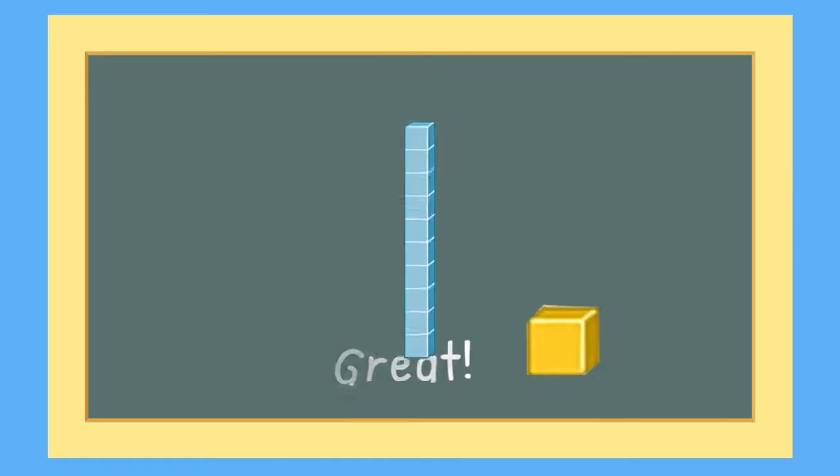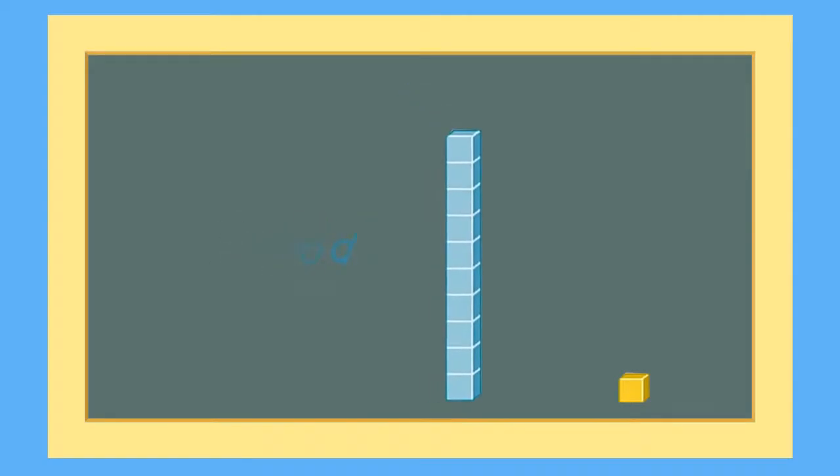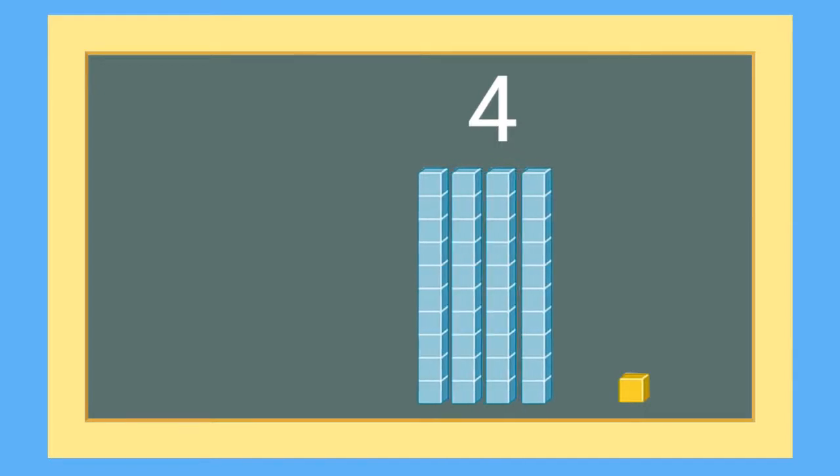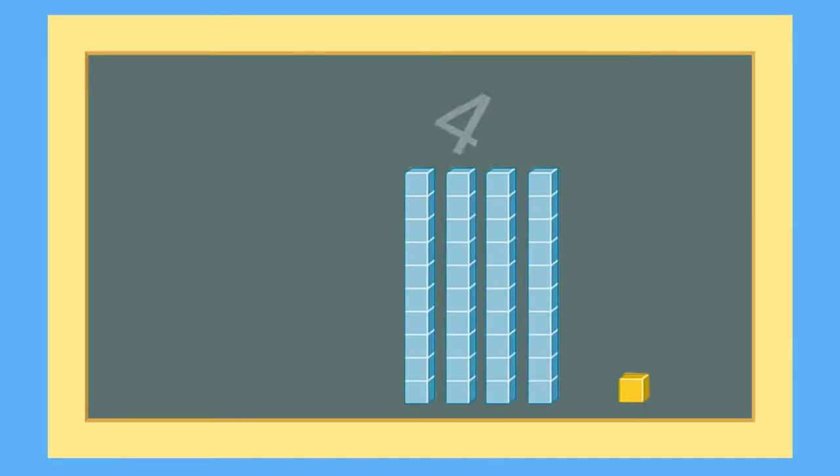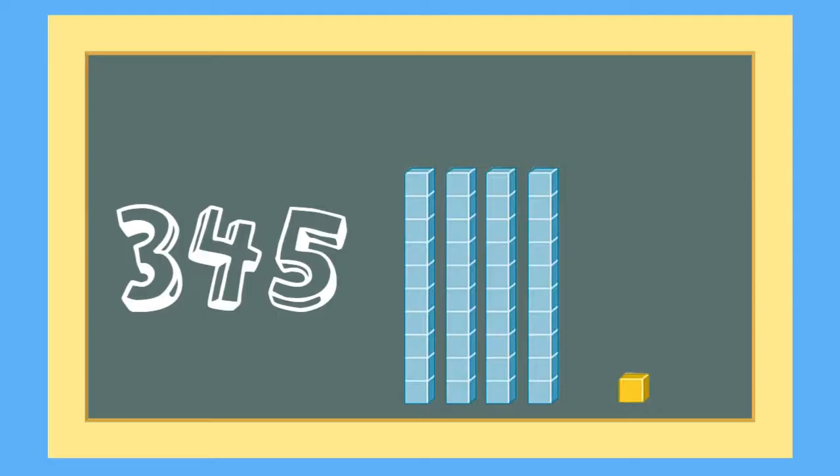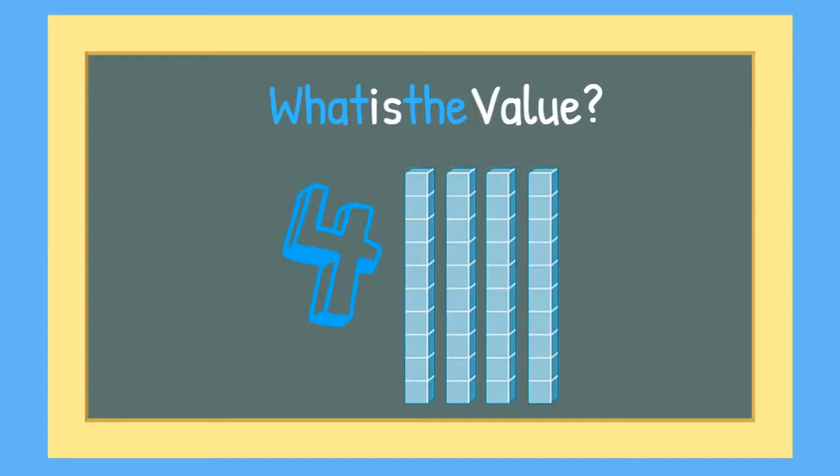When we get 10 1's cubes, we can make a 10 rod, and then the group of 10 is in the 10's place. If there is a digit in the 10's place, it means there is a group of 10. In our number 345, there are 4 groups of 10. What is the value of 4 groups of 10? Can you help me count them to find out?